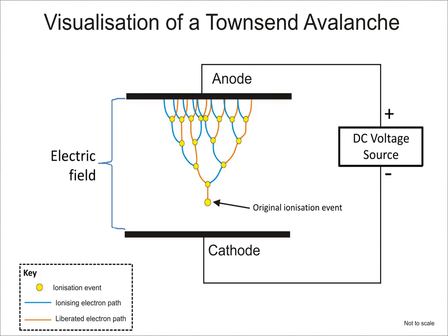An ion is an atom or molecule that has a non-zero net electrical charge. Since the charge of the electron, considered negative by convention, is equal and opposite to that of the proton, considered positive, the net charge of an ion is non-zero due to its total number of electrons being unequal to its total number of protons. A cation is a positively charged ion with fewer electrons than protons, while an anion is negatively charged with more electrons than protons.